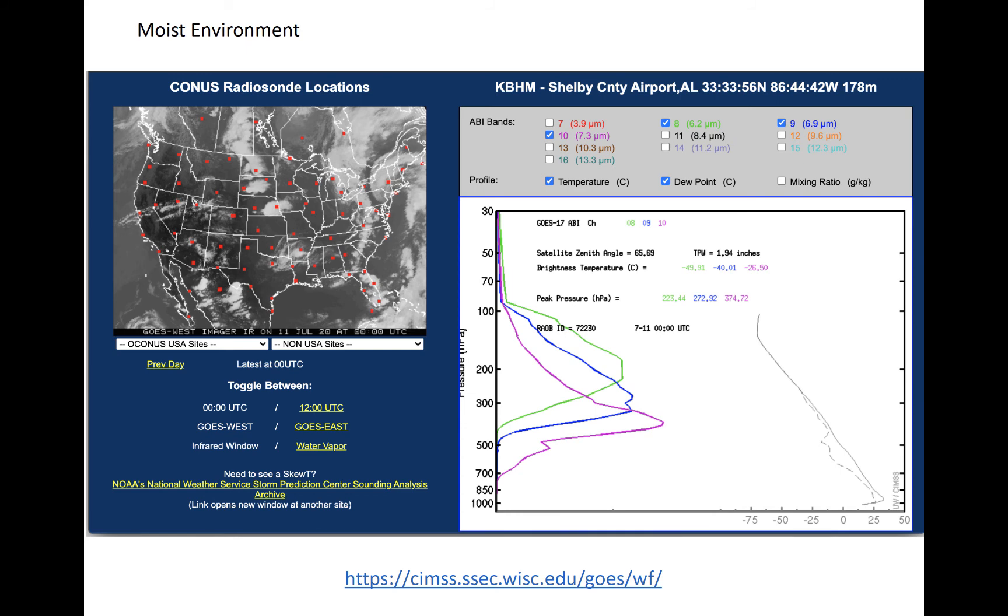We will wrap up by taking a look at two different sets of weighting functions. The first is at Shelby, Alabama. A sounding launch indicated almost 50 millimeters of total precipitable water, which is indicative of a moist mid-latitude environment. The temperature and dew point from the sounding are respectively shown as solid and dashed lines in this panel here, and the two are near each other, especially in the upper troposphere.